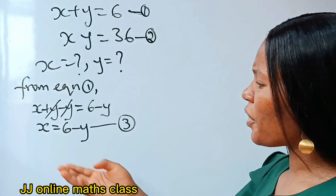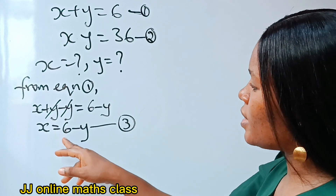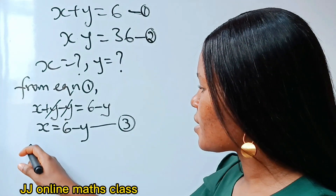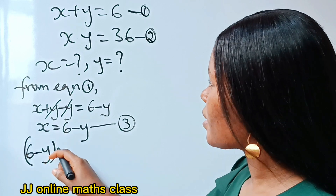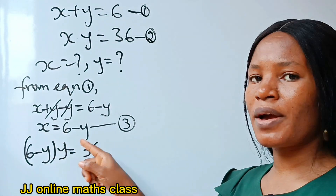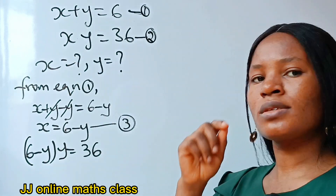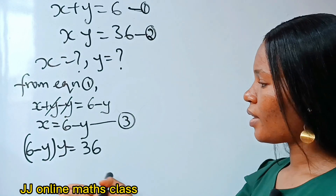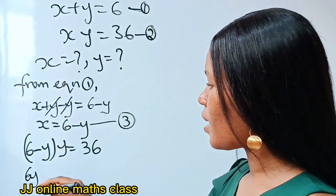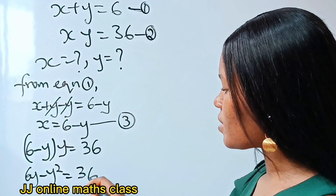Now if x equals 6 minus y, that means if we substitute this for x in equation 2, we are going to have that 6 minus y times y equals 36. So let's open the brackets: 6 times y gives us 6y, minus y times y gives us minus y squared, and this is equal to 36.